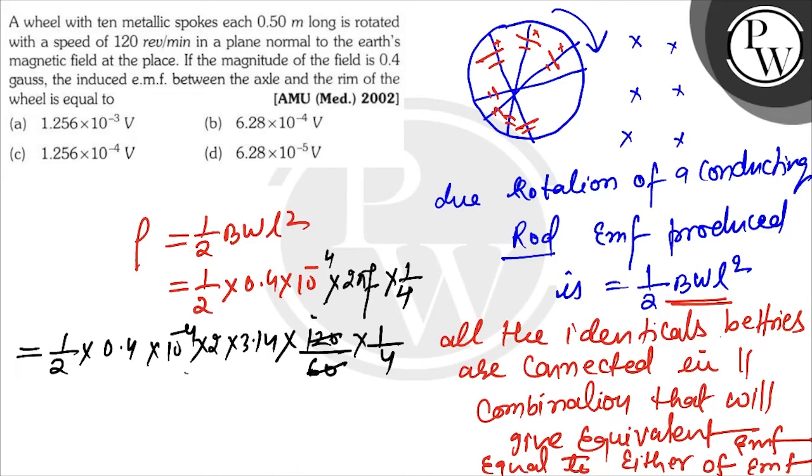So here 2 cancels here, and here 2 cancels. So 4 times 2 is 8. 3.2π, which is 3.2 times 3.14 times 10^-4.